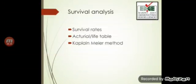Just to know these terminologies so that if they come in the options you should not get confused: there is a concept called survival analysis. The commonly used methods are survival rates, actuarial or life table method, and the Kaplan-Meier method. Survival analysis is basically a method used to assess how long a person lives — in statistical terms — after they get the disease. This is particularly for long-term diseases, especially like cancers.